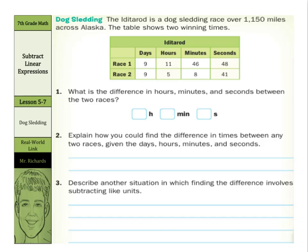Well, in our seconds, 48 minus 41 gets us 7 seconds. 46 minus 8 is 38 minutes. And 11 hours minus 5 hours is 6 hours. So explain how you could find the difference in times between any two races given the days, hours, minutes, and seconds.